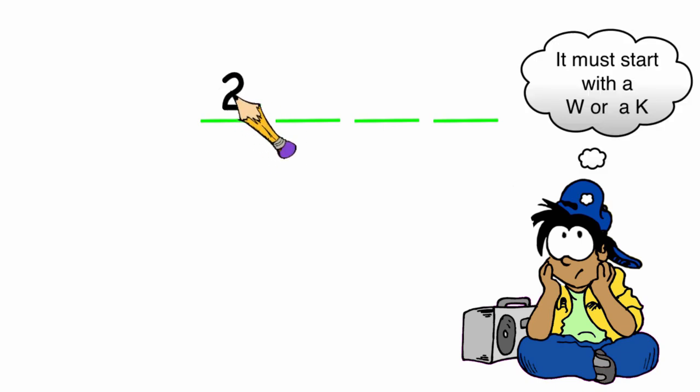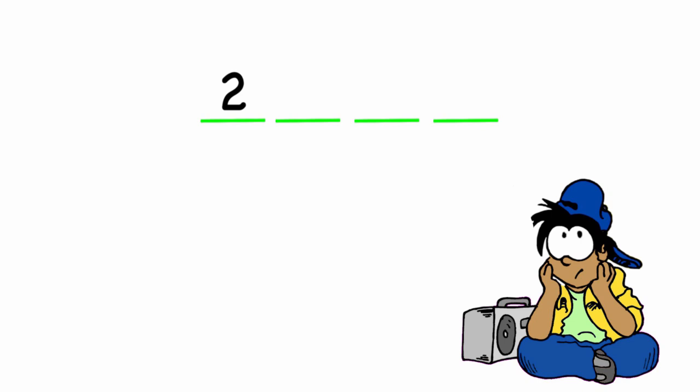One way of doing that is to lay out my four possible options. Well, I know the first letter has to be either a W or a K. So I have two options, so I'll put a 2 in the first space. Then the next letter can be any one of the 26 letters in the alphabet. So I'll have 26 there.